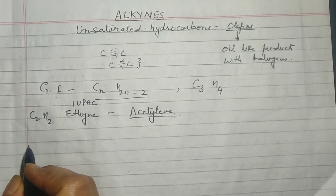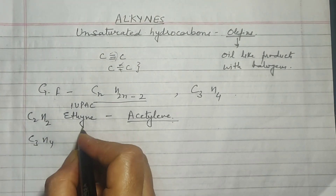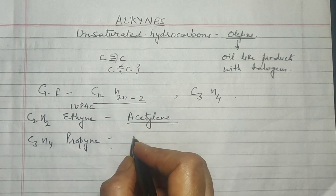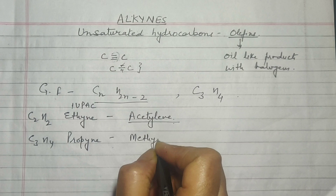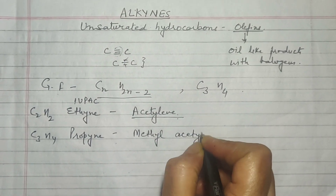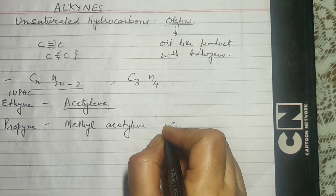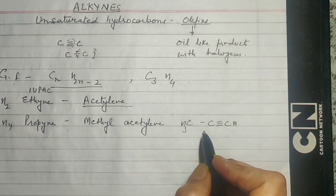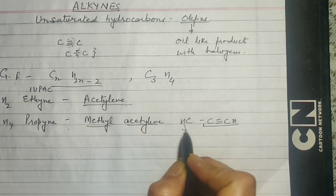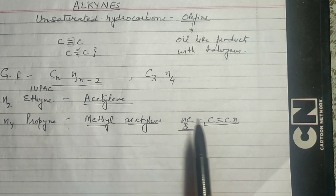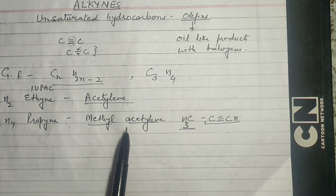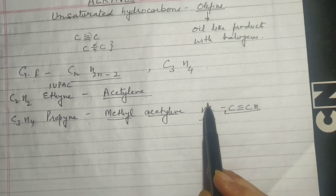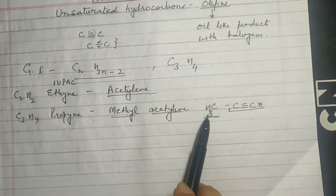The next member in the series is C3H4. The IUPAC name is Propyne, and the common name is Methylacetylene. If you look at the structure it is CH3–C≡C–H. The triple bond part is referred to as Acetylene, and since CH3 is a methyl group attached to it, it is called Methylacetylene.